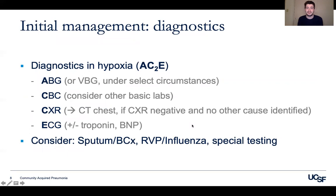For initial management diagnostics, there's a mnemonic called ACE2. ACE reminds you to order an ABG, CBC, chest x-ray, or EKG in the presence of hypoxia. The ABG prompts consideration of whether a VBG would be acceptable. The CBC reminds you to look for labs like a BMP to check for AKI in the setting of emerging sepsis. The chest x-ray reminds you to consider advanced imaging — if negative with no cause identified, think about ordering a CT chest and potentially a CTPE. The EKG reminds you to think of troponins and BNP to evaluate cardiac causes of dyspnea or significant PE.